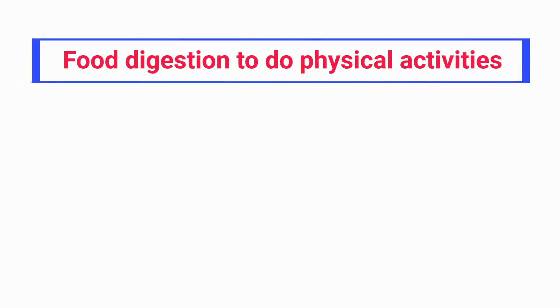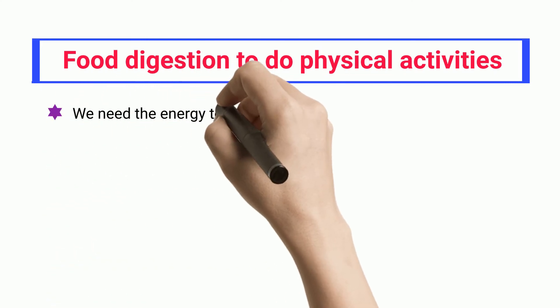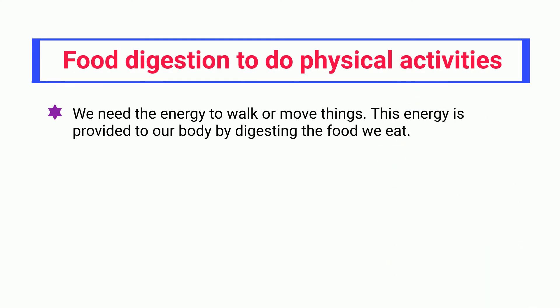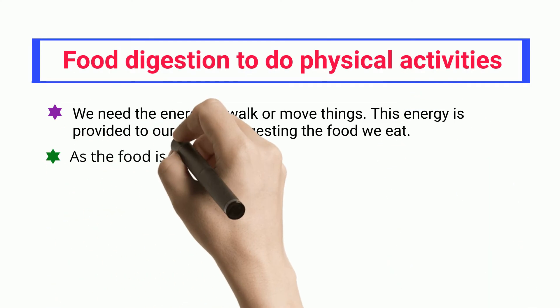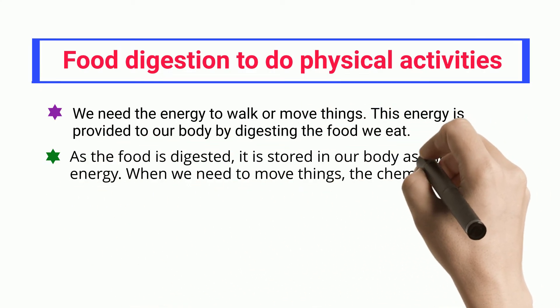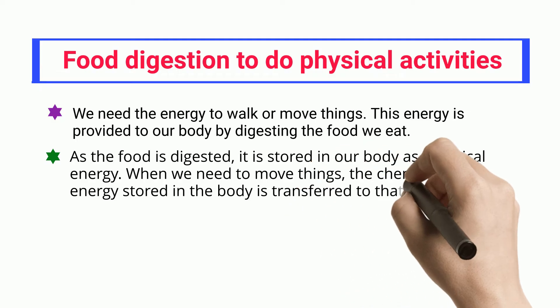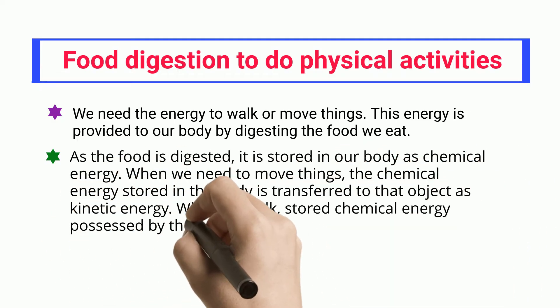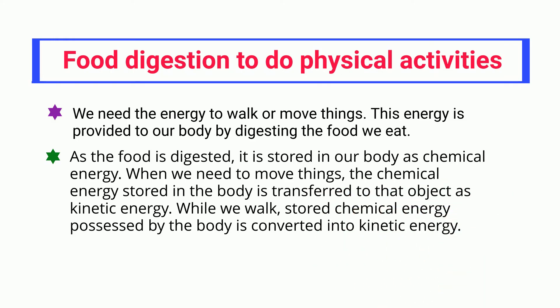Food Digestion for Physical Activities. We need energy to walk or move things. This energy is provided to our body by digesting the food we eat. As the food is digested, it is stored in our body as chemical energy. When we need to move things, the chemical energy stored in the body is transferred to objects as kinetic energy. While we walk, stored chemical energy possessed by the body is converted into kinetic energy.